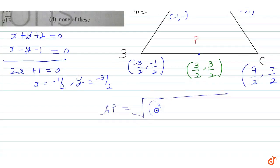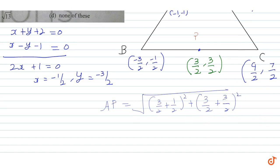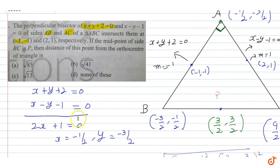Distance AP = √[(3/2 - (-1/2))² + (3/2 - (-3/2))²] = √[(3/2 + 1/2)² + (3/2 + 3/2)²] = √[(4/2)² + (6/2)²] = √[4 + 9] = √13. So the distance AP = √13, and the correct answer is option C.